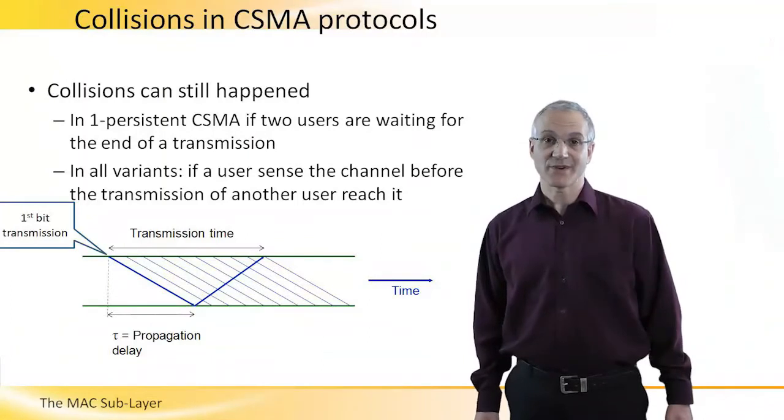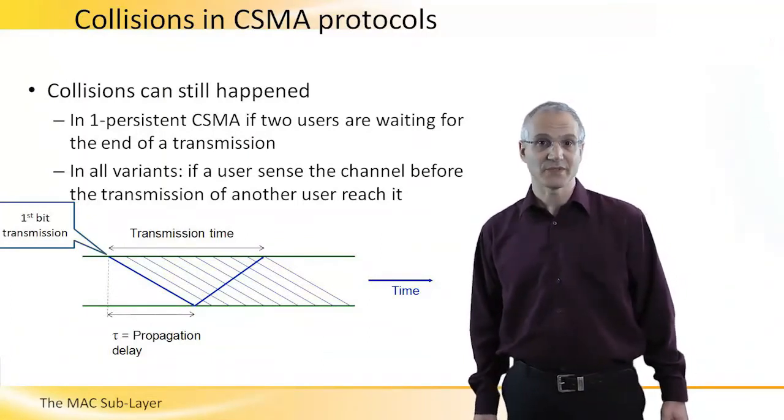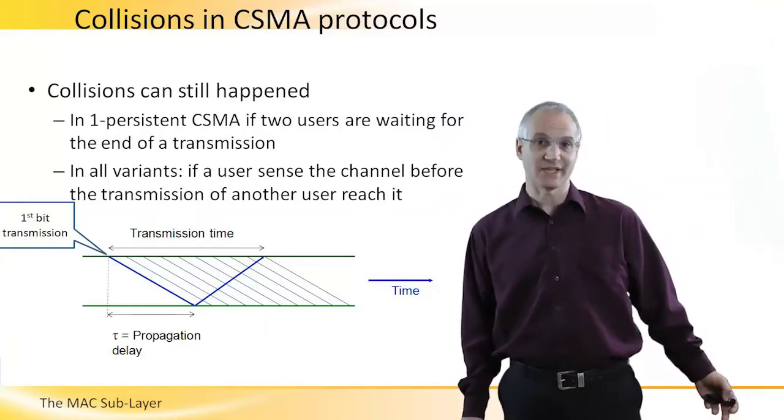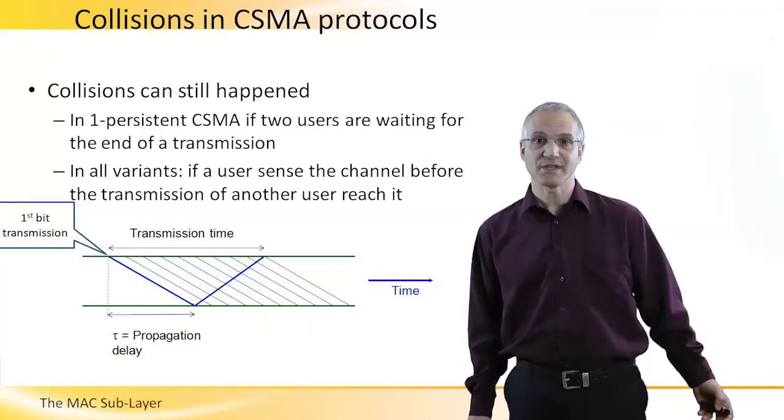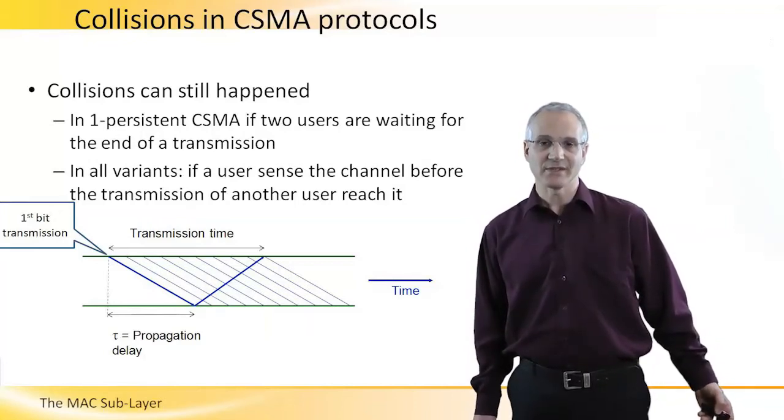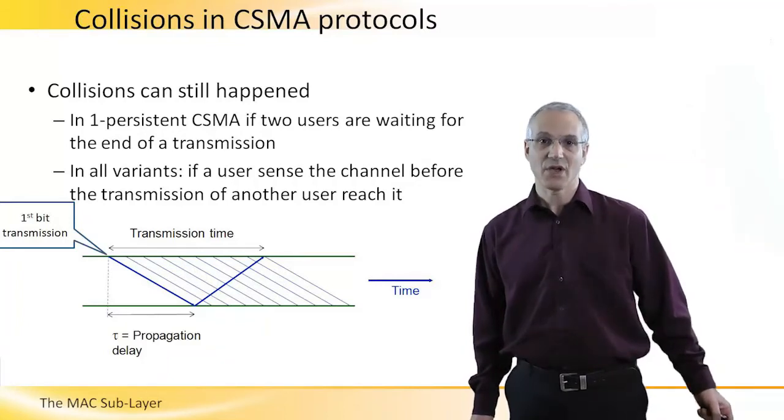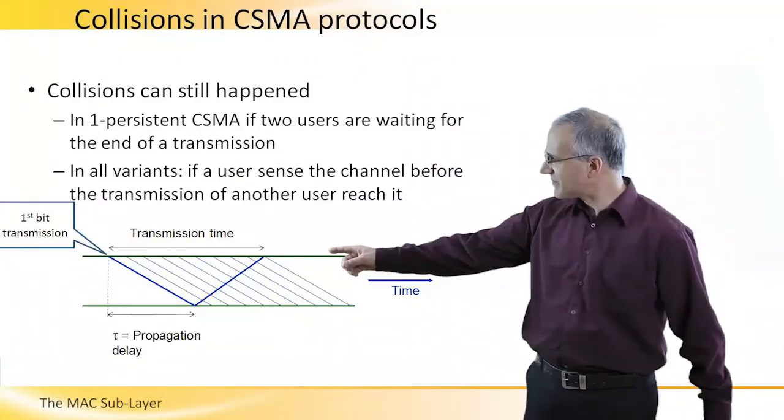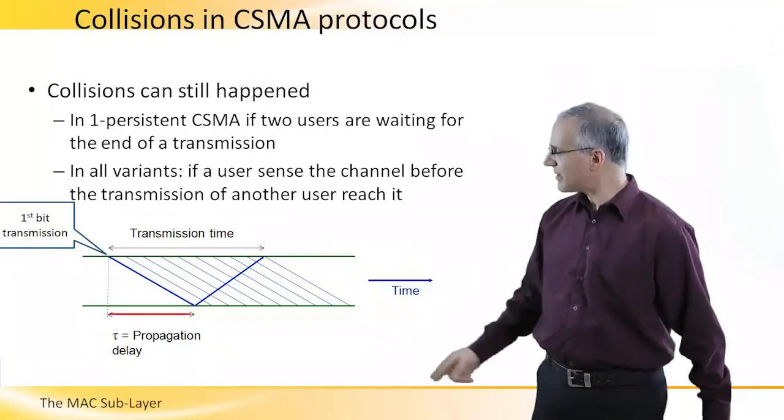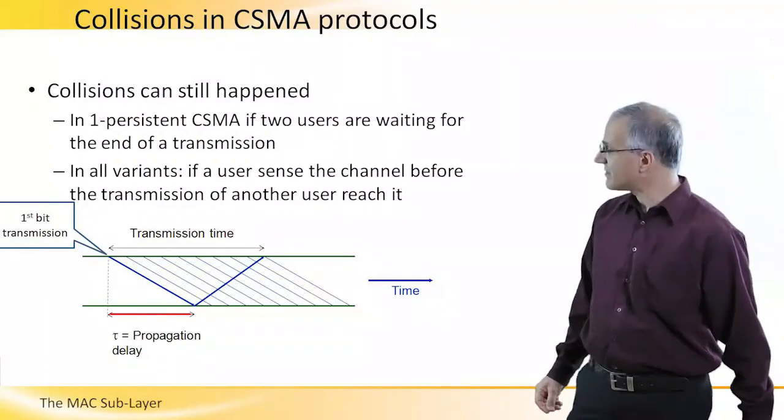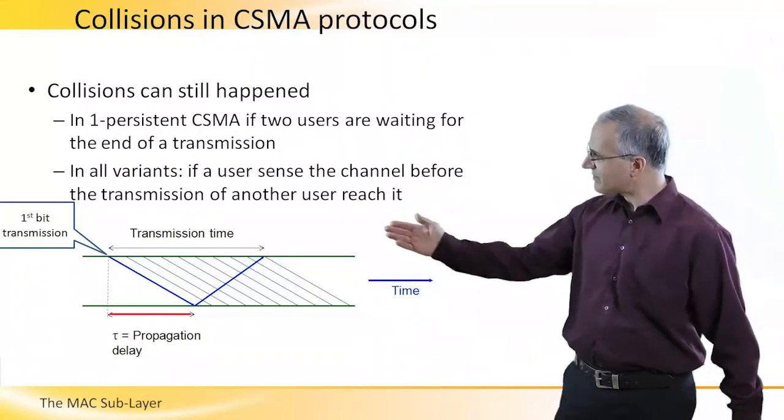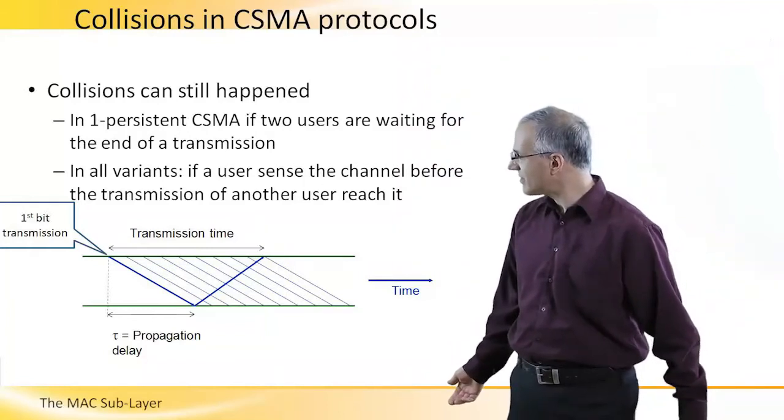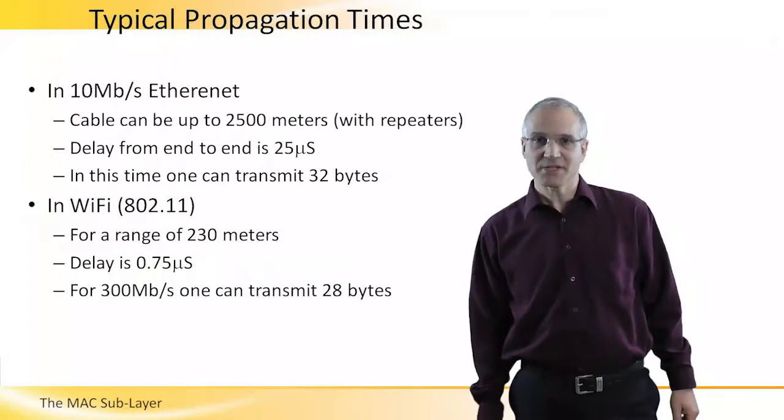While CSMA protocols drastically decrease the number of collisions, collisions can still occur. Of course, in 1-persistent and also in p-persistent with probability p, if two users are waiting for the end of the transmission, they will collide. But in all variants of CSMA, collision can still occur because when a user senses the channel to be idle, it doesn't really mean that the channel is idle. What you can see here is that some user, the user above, starts transmitting the first bit. However, this transmission needs to propagate through the network and it doesn't happen in zero time. And if after this transmission is started, but before the signal reached me, I sense the channel, I will start transmitting too and a collision will occur.